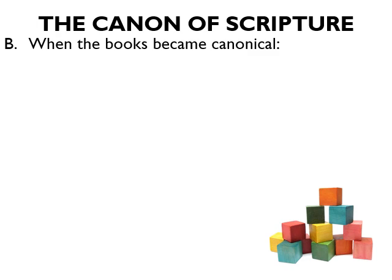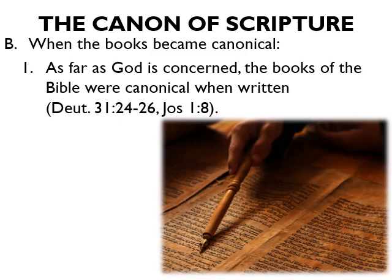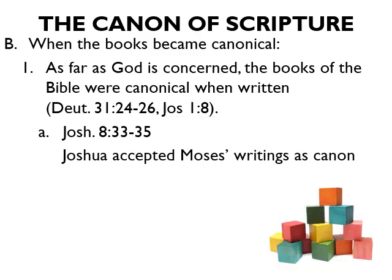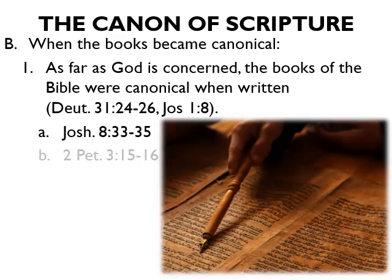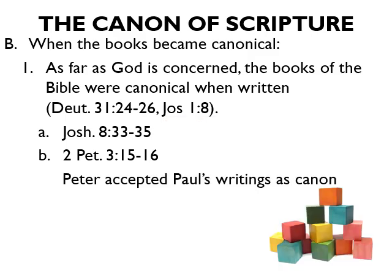When did the books of the Bible become canonical? As far as God is concerned, the books were canonical when they were written. Two passages allude to this: Joshua 8:33-35, where Joshua accepts Moses' writing as canon when he reads the law to the people, and 2 Peter 3:15-16, where Peter recognized Paul's writings as canon — as the rule for the church to follow. The canonical books were then collected and grouped into one book, but this was a gradual process.